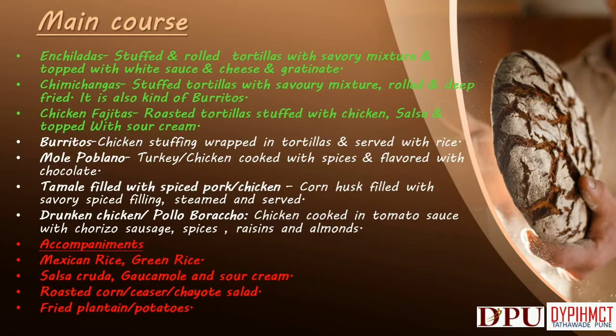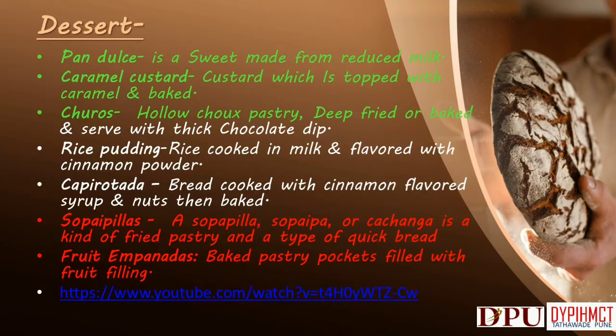Accompaniments: Mexican rice, green rice, salsa cruda, guacamole and sour cream, roasted corn or Caesar or chayote salad, fried plantain, potatoes. Desserts from Mexico: Panadería — a sweet made from reduced milk. Caramel custard — custard topped with caramel and baked. Churros — hollow choux pastry, deep fried or baked and served with thick chocolate dip. Rice pudding — rice cooked in milk and flavored with cinnamon powder. Capirotada — bread cooked with cinnamon-flavored syrup and nuts, then baked. Sopapillas — a kind of fried pastry and type of quick bread. Fruit empanadas — baked pastry pockets filled with fruit filling.